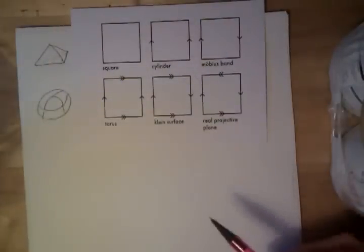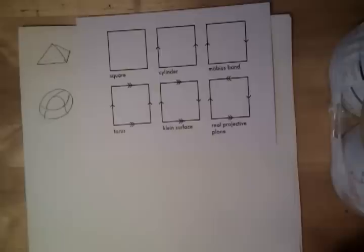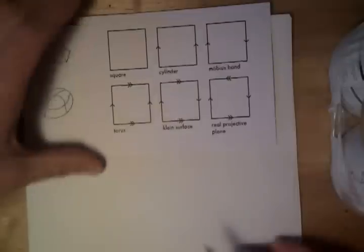And similarly, it turns out, if we do this with any graph on a torus, then we always get the number zero. And in fact, we can do this for any surface at all. And it turns out that this number is always a constant.